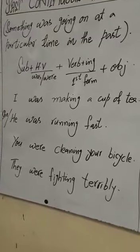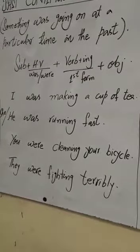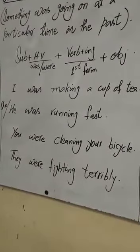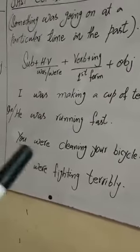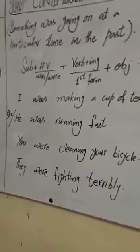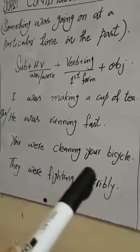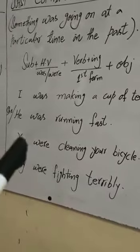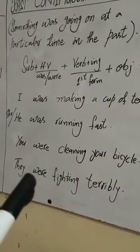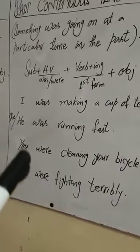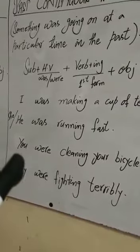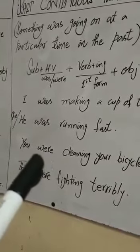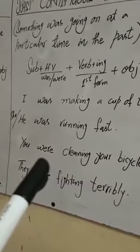Sentences دیکھیے: I was making a cup of tea — میں چائے کا ایک cup بنا رہی تھی۔ He or she was running fast — یہاں پر he یا she دونوں کے لیے was کا use ہوگا۔ You were cleaning your bicycle. They were fighting terribly — یہاں پر you اور they دونوں کے ساتھ were کا use کیا گیا ہے، کیونکہ they plural ہے اور you کے ساتھ بھی were ہی use ہوتا ہے۔